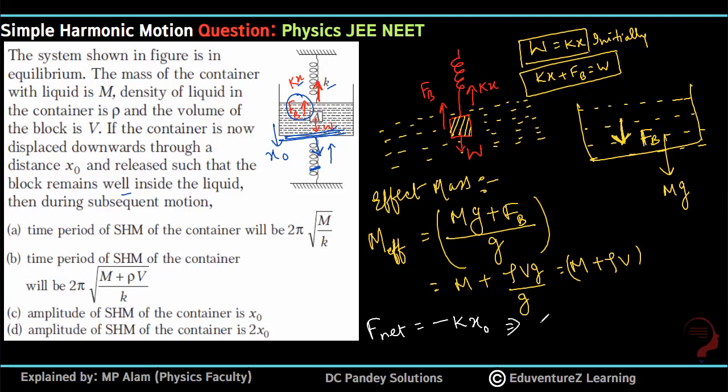Now see, what is f net? f net is mass into acceleration equals minus k x-naught. From here equals minus k by mass effective into x-naught. So this becomes your omega square. And what's the time period formula we write? 2 pi by omega. What is omega here?